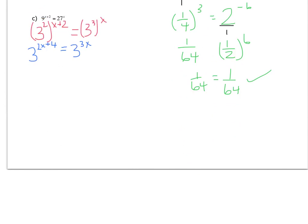And then the other one becomes 3 to the 3x. I'm going to ignore the bases for the moment, and I'm just going to bring down the exponents and solve for the variable. I'm taking the exponents and bringing them down, ignoring the base. I'm not going to show all the inverses for this, but when you do your inverses, you should get x equals 4.